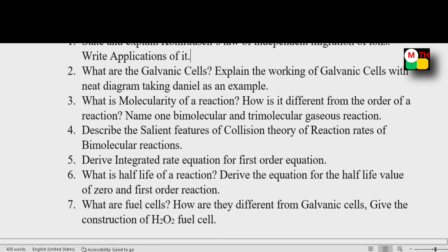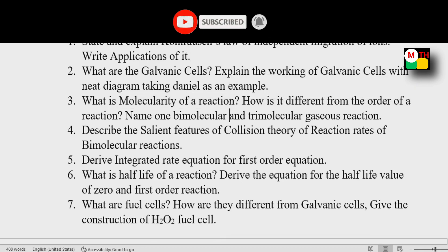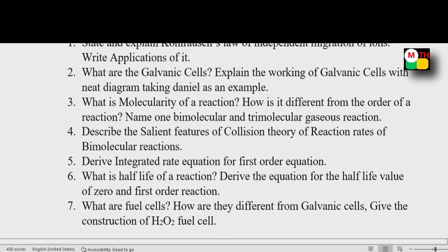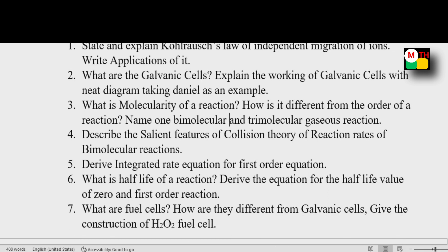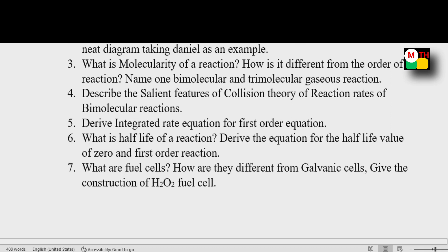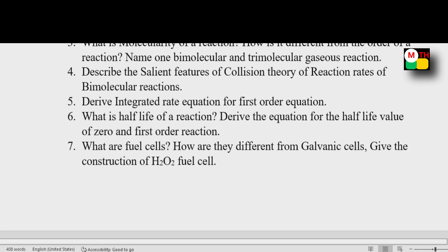Next question from Chemical Kinetics: Molecularity of Reaction. Third question covers Electrochemistry and Chemical Kinetics. Next: Describe the salient features of the Collision Theory of reaction rates of bimolecular reactions — this has a 30% to 100% chance of appearing. Next: Derive the integrated rate equation for the first order reaction. The first order reaction integrated rate equation and half-life of reaction are final topics. Zero and first order reactions are included.